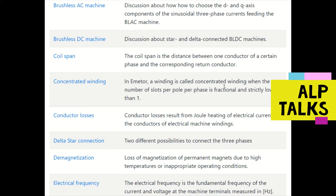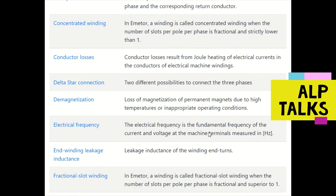Concentrated winding: when the number of slots per pole per phase is fractional and strictly lower than one, we generally call it concentrated winding. Conductor losses result from Joule heating of electrical current in the conductors.